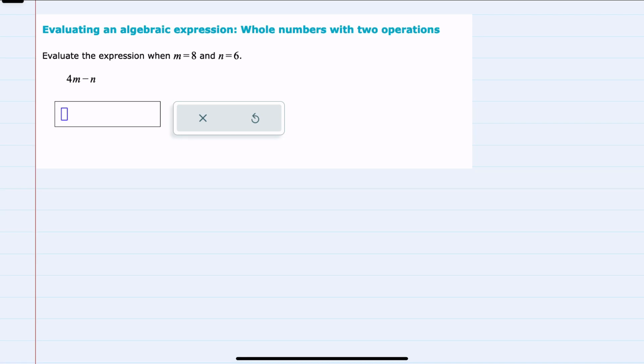In this video, I'll be helping you with the ALEKS problem type called evaluating an algebraic expression: whole numbers with two operations. We're asked to evaluate the expression when m equals 8 and n equals 6, and the expression is 4m minus n.